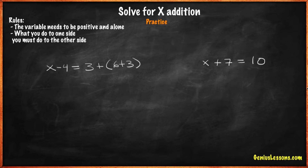First, we solve what's inside the parentheses. 6 plus 3 is 9. Now we can combine like terms on the right side. 3 plus 9 is 12.